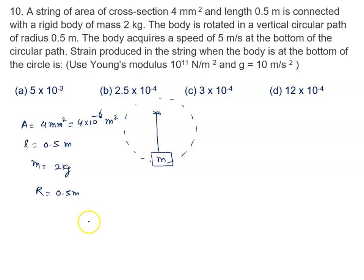The body acquired speed of 5 meter per second at the bottom. The strain produced in the string when the body is at the bottom of the circle needs to be found.